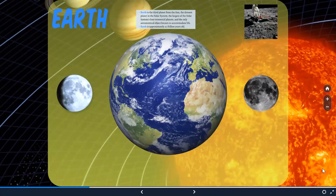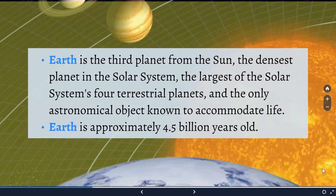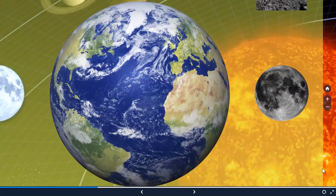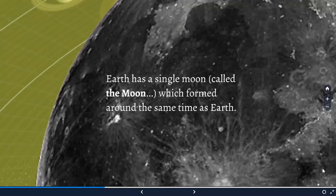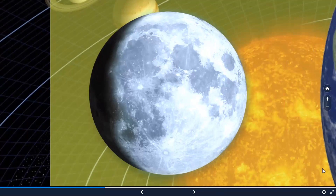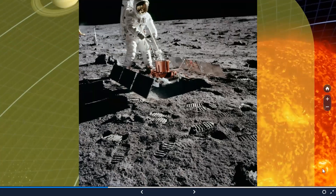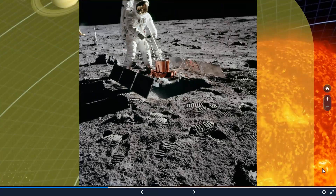Coming back and landing on our blessed planet Earth, the third planet from the sun — it is the densest planet in the solar system, the largest of the terrestrial planets, and the only astronomical object known so far to accommodate life. Still, research is ongoing, and till today the answer to the existence of life elsewhere is no. Earth is approximately 4.5 billion years old and has a natural satellite revolving around it called the moon, which formed around the same time as Earth.